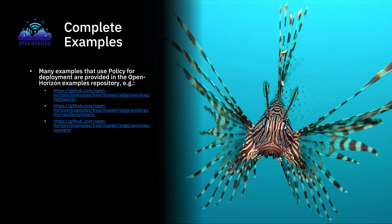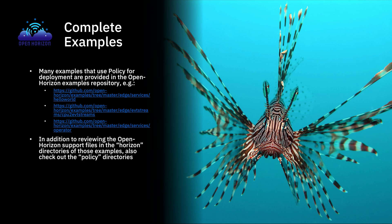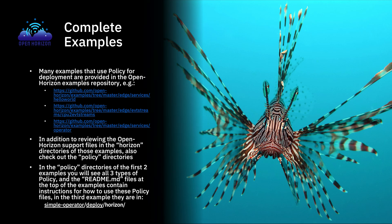For complete examples, many examples that use policy for deployment are provided in the Open Horizon examples repository. The hello world, CPU to event streams, and operator examples are available to follow. In the Horizon directories, also check out the policy directories — at least in the first two examples — where you'll see all three types of policy files. The readme.md files at the top of each example contain instructions for using the policy files. In the third example, the policy files are located in the simple operator directory, then the deploy directory, and then the horizon directory underneath.